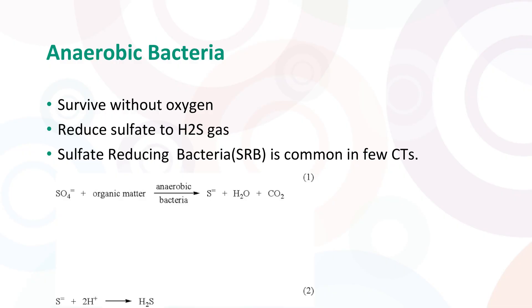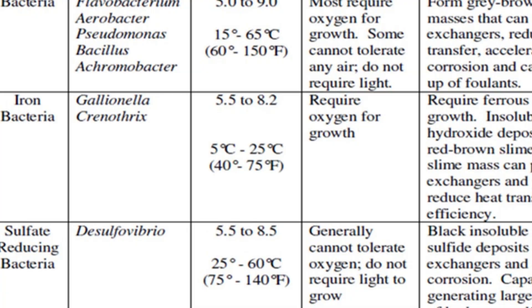Sulfate reducing bacteria is basically an anaerobic bacteria — that bacteria grows in the absence of oxygen. Sulfate reducing bacteria can survive under various conditions of pH and temperature.